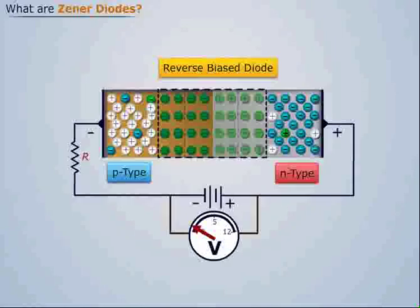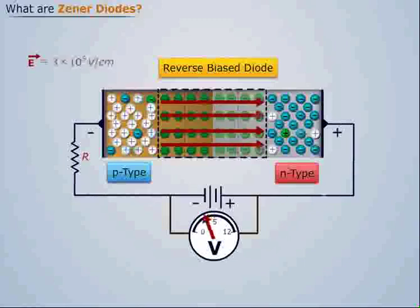When a reverse voltage of 5 volts or less is applied on a reverse biased diode, there appears an intense electric field generally of the order 3×10^5 volts per centimeter across the narrow depletion region.